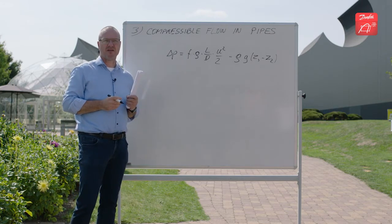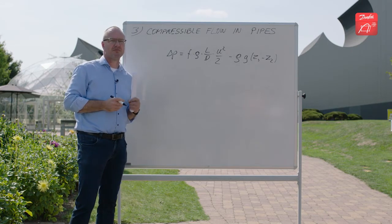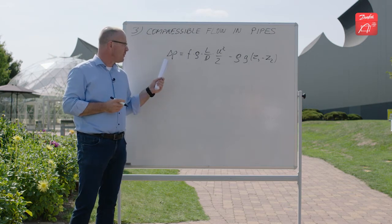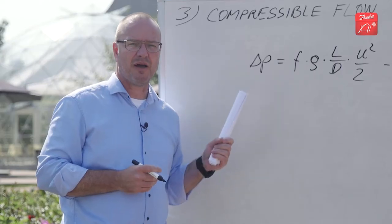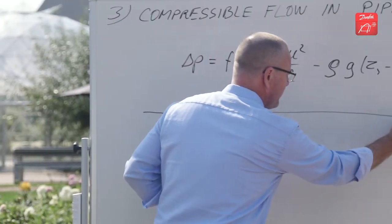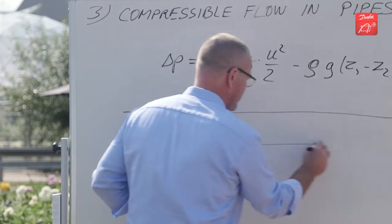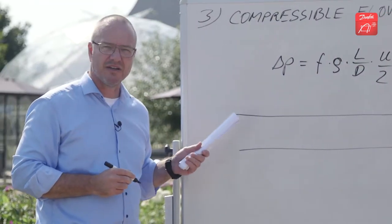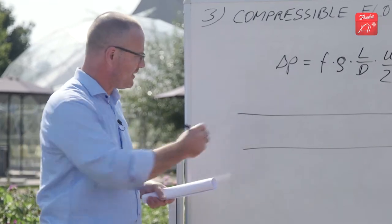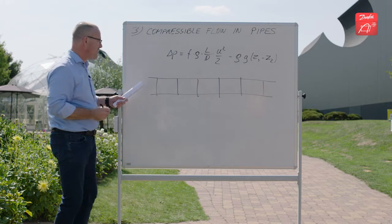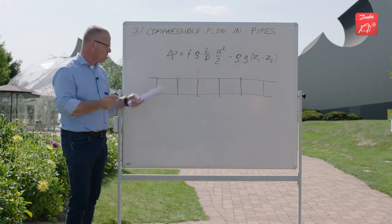This equation is also used for compressible flow, or at least we use it in CoolSelector. The way we do it is when you have a long pipe with gas flow in it, let's just draw it. We take the pipe and split it into a lot of smaller pipes.